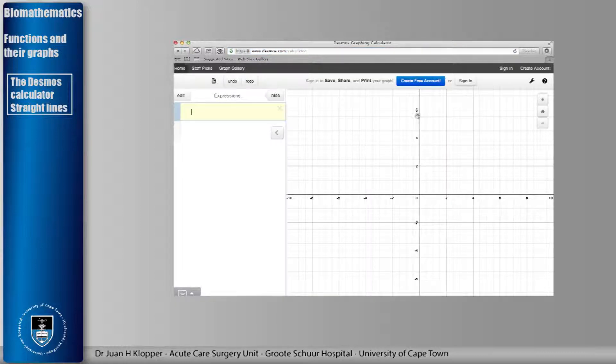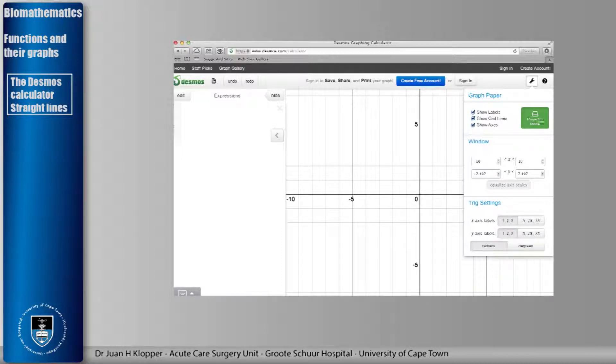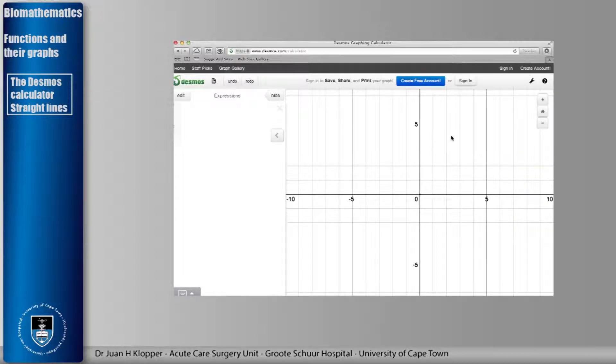So if we just launch the calculator there you can create a free account. First things first, you'll note the Cartesian coordinate system going here from on the y-axis from 8 to negative 8, from 10 to negative 10 on the x-axis. What you can do is on this little option button there put on projector mode and that just zooms things in a bit, makes things a bit larger so that on the screen these graphs appear a bit better.